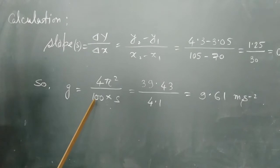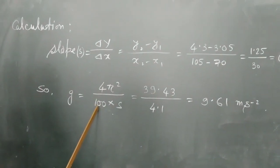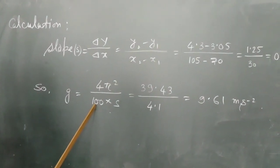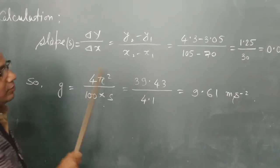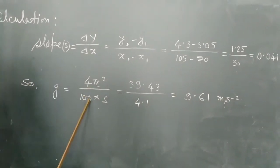Let me talk about why do we put 100 here. Here we have taken the effective length in centimeters. So to convert that centimeter into meter, we have to divide by 100.